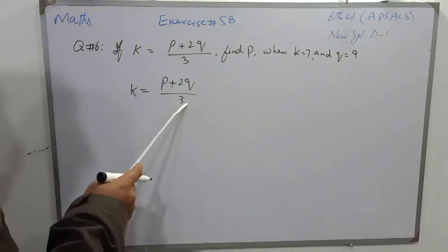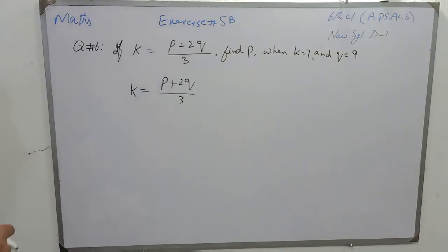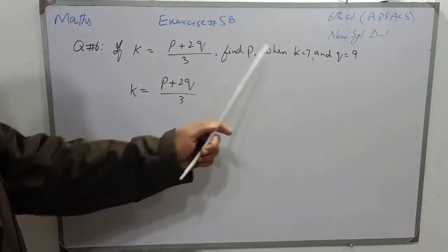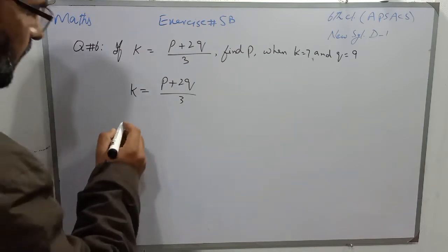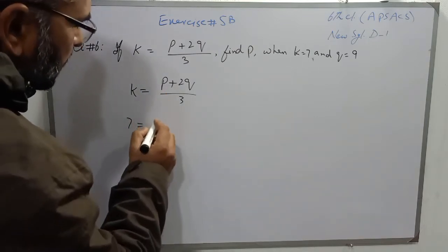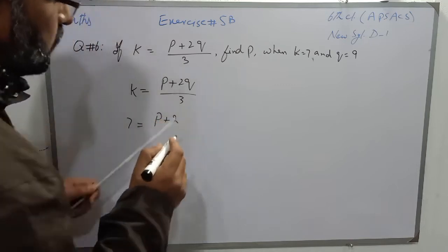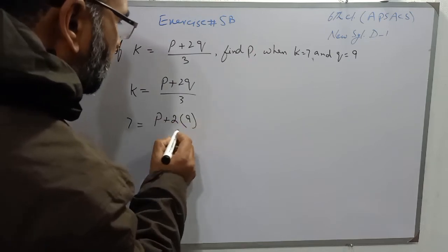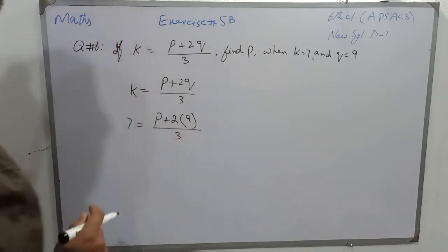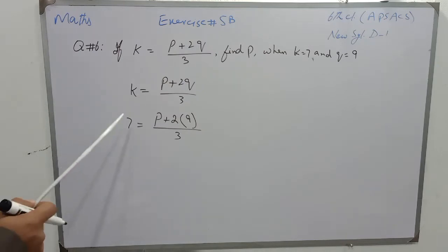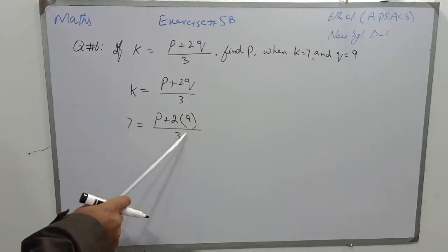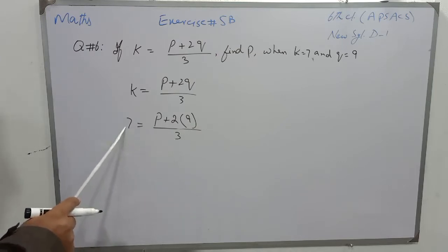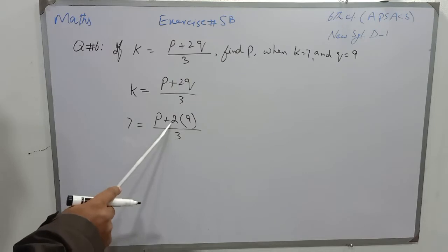So I will write 2 into 9 over 3, and then we will simplify it. Putting the values of k and q: in place of k I will write 7, is equal to p plus 2 into 9 over 3. We have to find the value of p, and there is a single denominator, that is 3, on the right side. We will transfer this 3 to the other side and it will multiply because it is dividing.